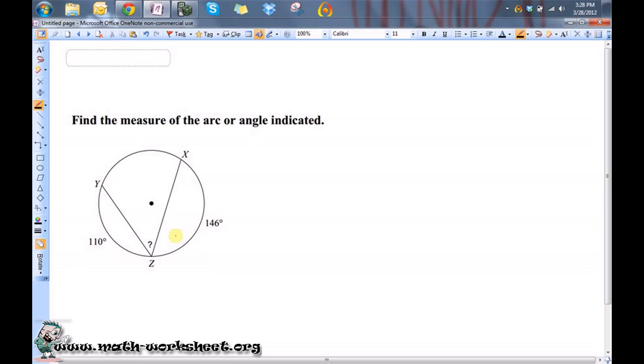Okay, so whenever you have something like this, the measure of the inscribed angle is one half the measure of the arc that is intercepted by the angle.